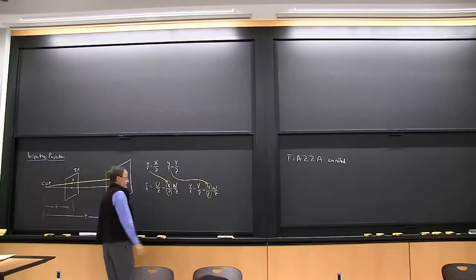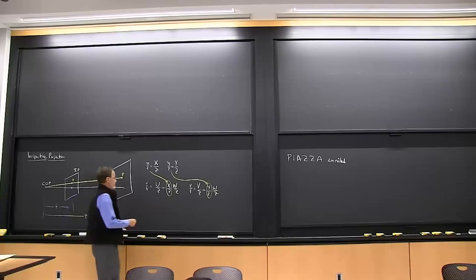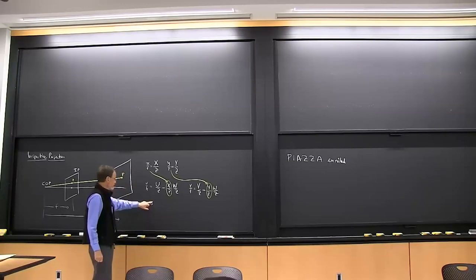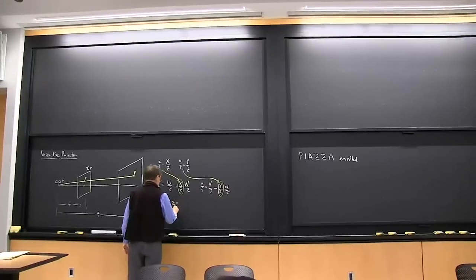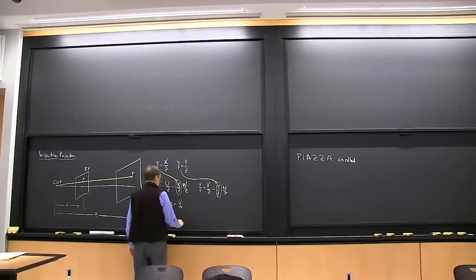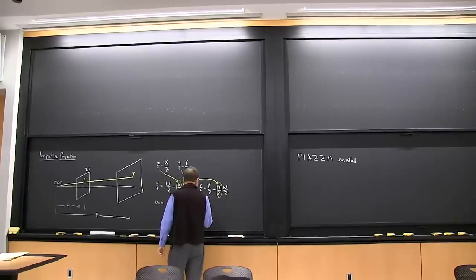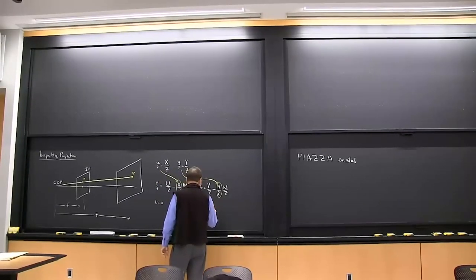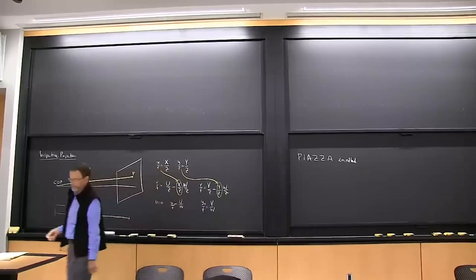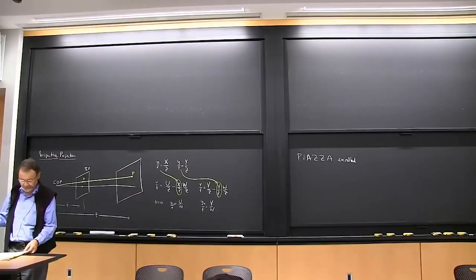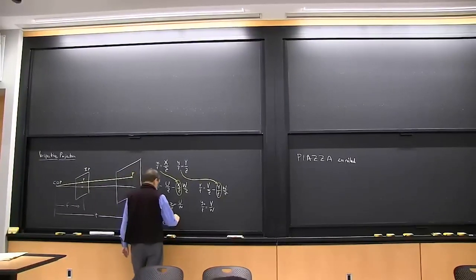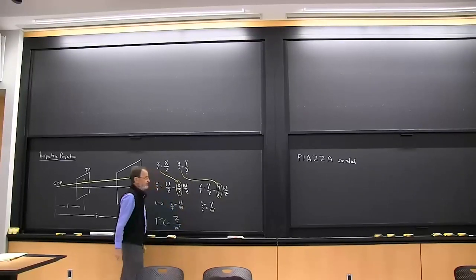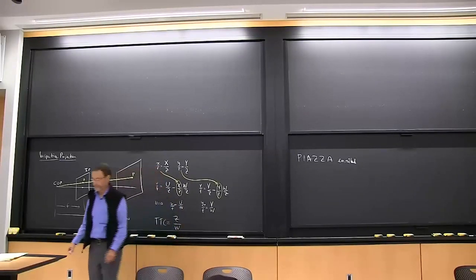We introduced the idea of the focus of expansion — the place where u is zero — and solved to get x over f equals u over w. So the focus of expansion is the point in the image towards which you are moving. We then introduced the optic flow concept and talked about various ways of estimating it.